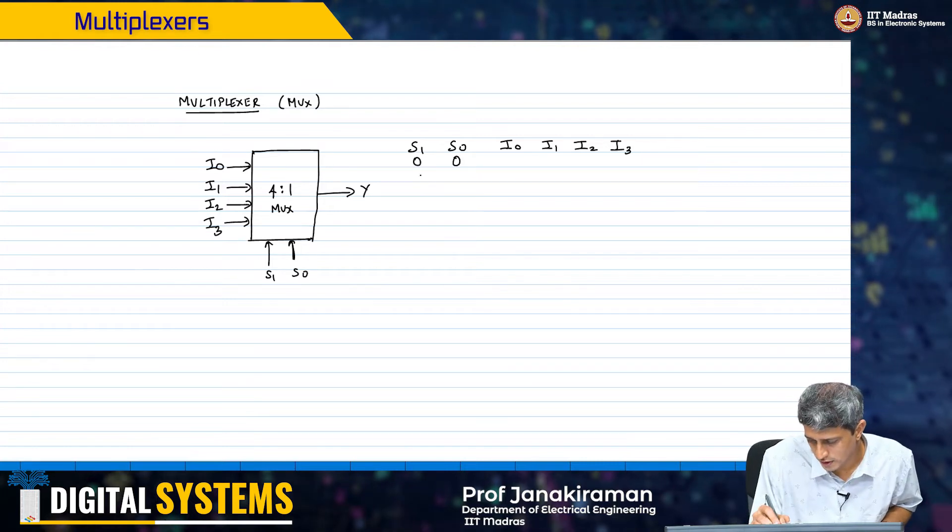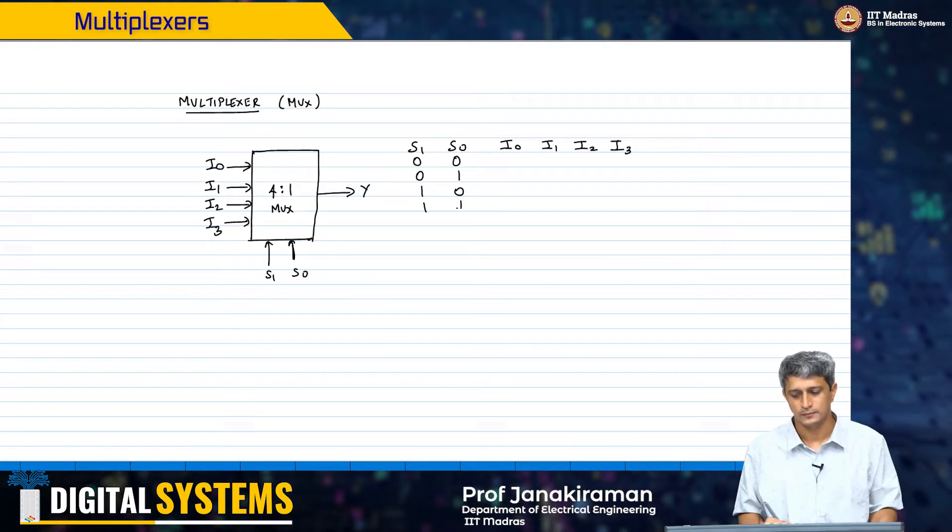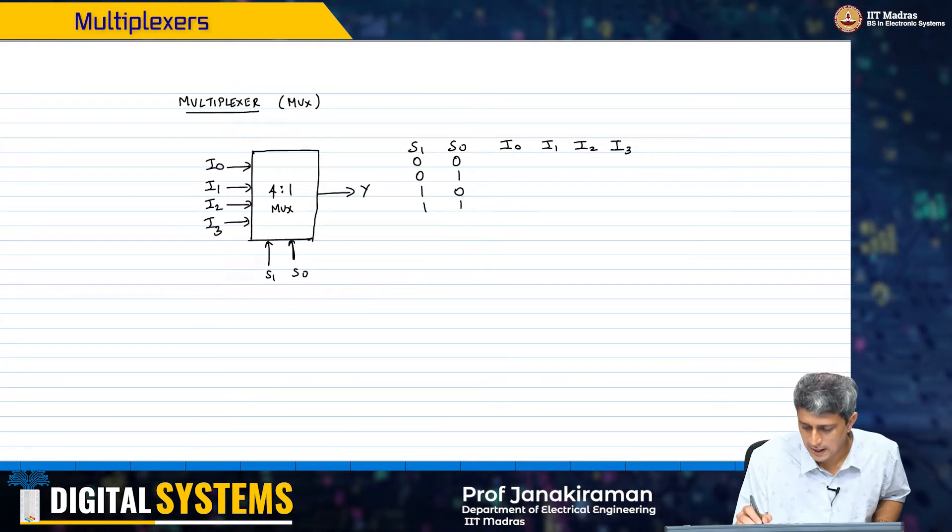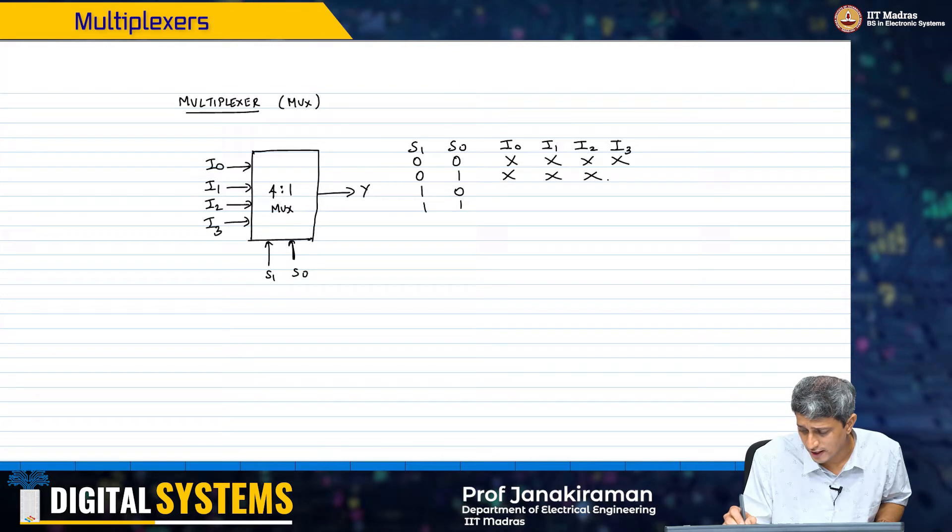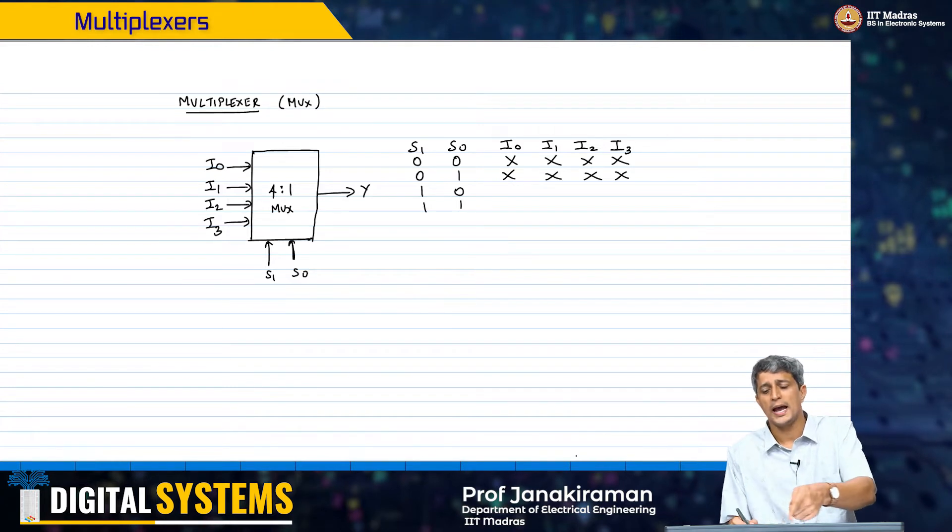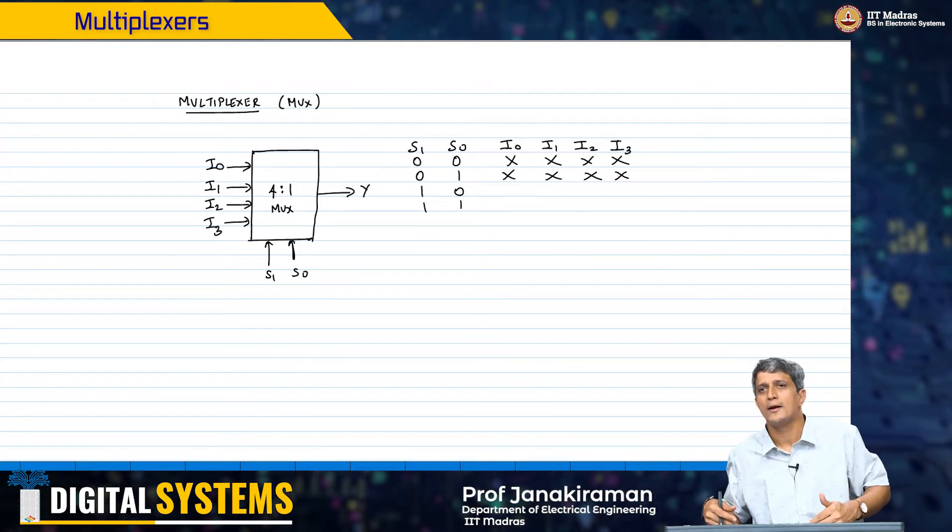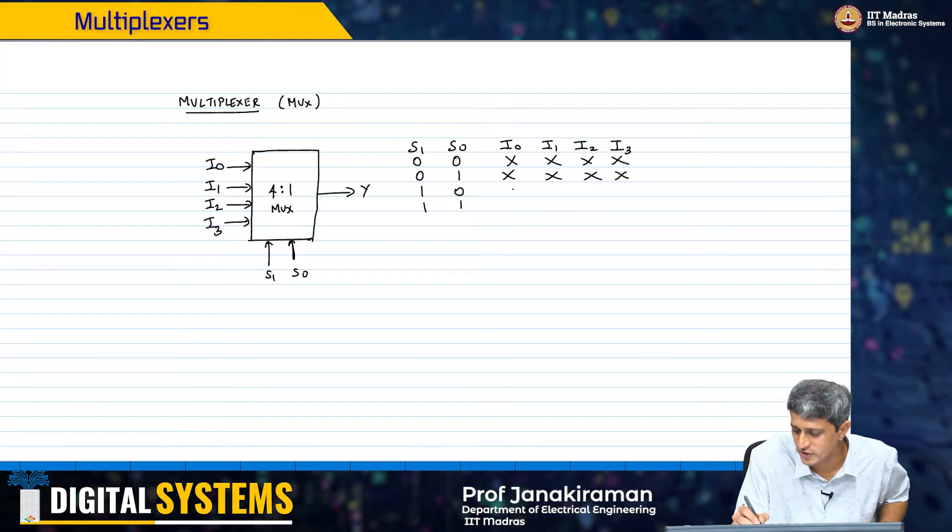And again I have 0 0, 0 1, 1 0, 1 1. Now I am not going to worry about this combination. I am going to write this truth table slightly different because you already see for just a 4 to 1 multiplexer, what do I have here? I have 6 input combinations.